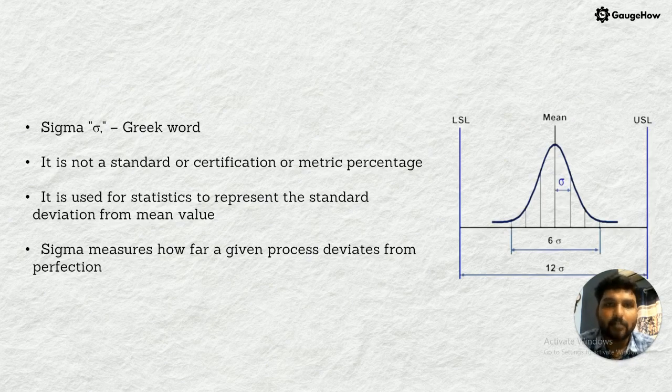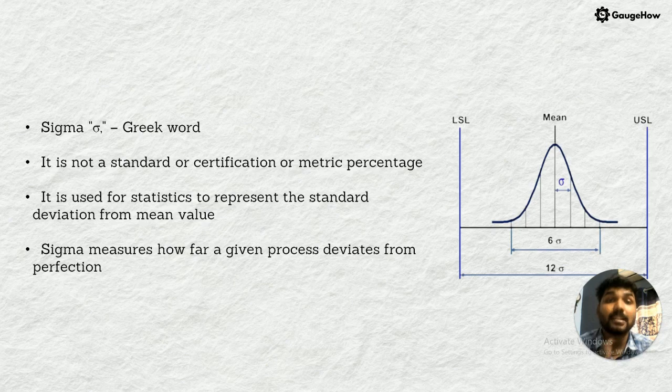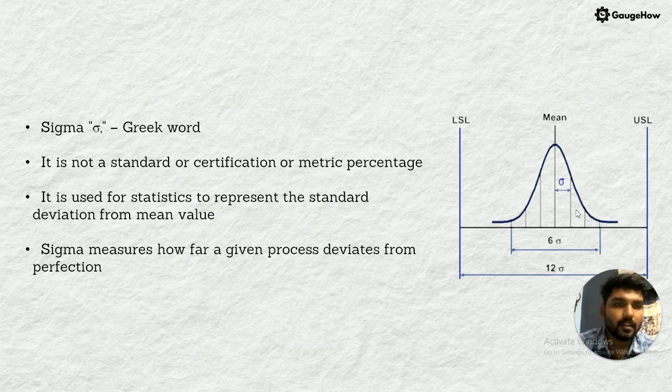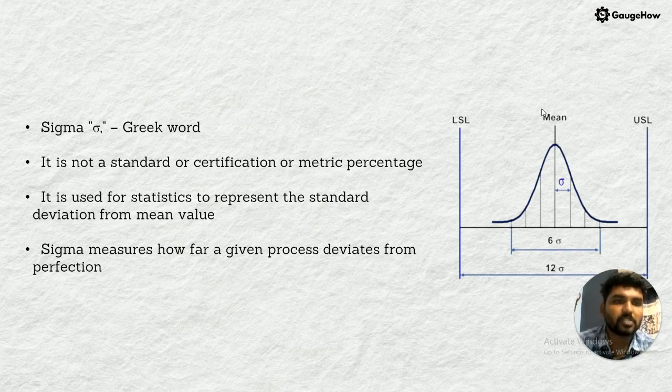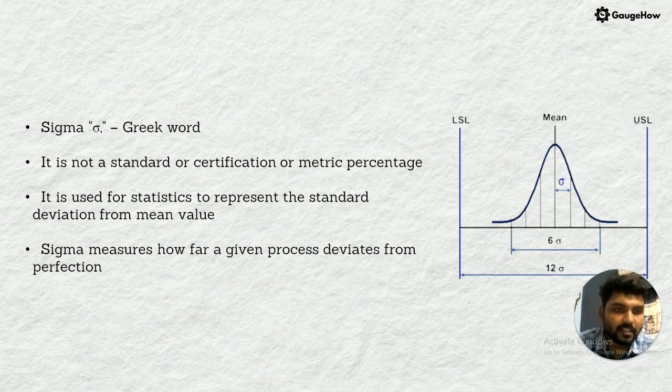Sigma is a Greek word. It is not a standard certification or metric percentage. It is used for statistics to represent the standard deviation from the mean value. Mean value is process perfection or process output. Here is a schematic view with the mean, which is called process perfection, LSL lower specification limit and USL upper specification limit. Sigma measures how far the process deviates.